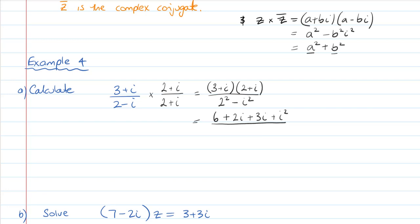On the bottom: 2 squared is 4, minus negative 1. Don't rush the bottom — the top always takes a bit longer. On top: 6 plus i squared becomes 6 plus negative 1, which is 5. And 2i plus 3i is 5i. On the bottom, 4 plus 1 is 5. Simplified, that gives me 1 plus i. So there's the simplification of that division.